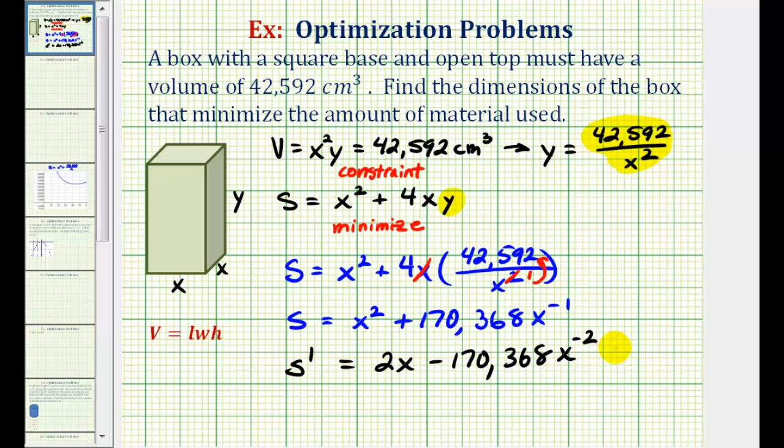We want to know when this is equal to zero or undefined. Let's go ahead and write this as two x minus 170,368 divided by x to the second equals zero. Notice how this would be undefined when x equals zero, but x can't equal zero. Otherwise, this length here would be zero. So let's go ahead and solve this equation for x on the next slide.